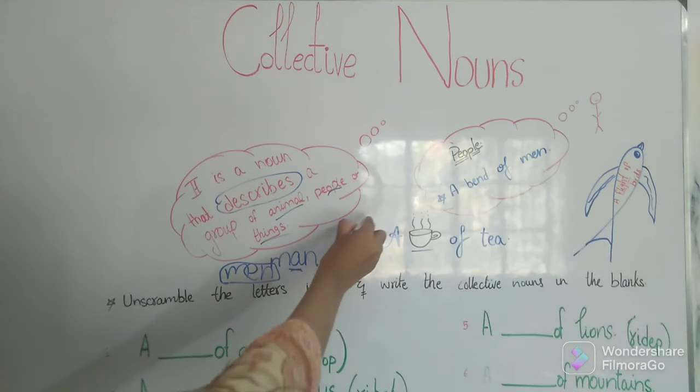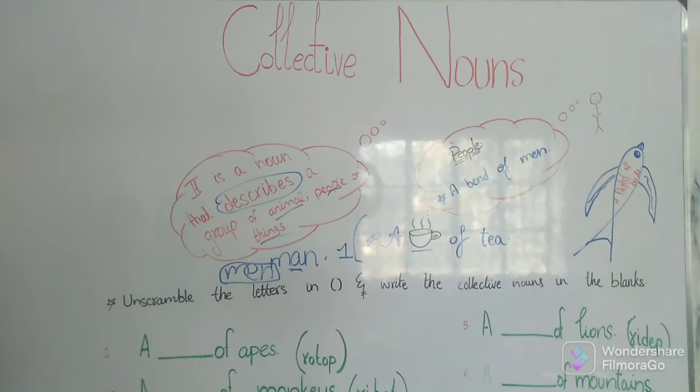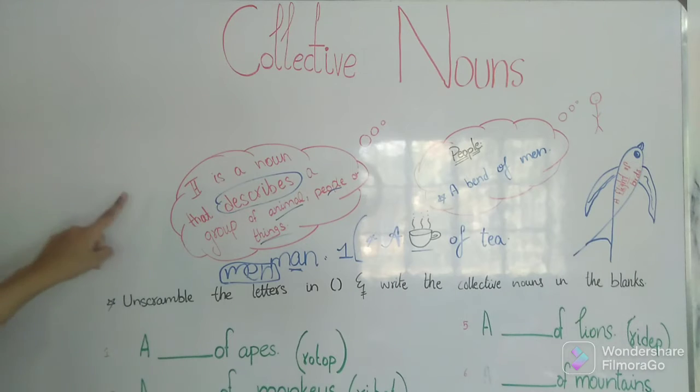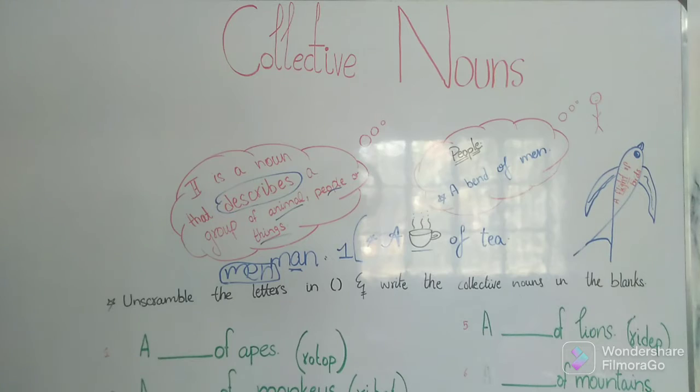Here, now this example is of things - a cup of tea. Now here, what is the collective noun? It's the cup because it describes - we can say tea, we can say a mug of tea. Here it is saying that it is a cup of tea. We are not taking a mug of tea, a glass of tea, and all that stuff. So this cup is collective noun because it describes the group of tea.